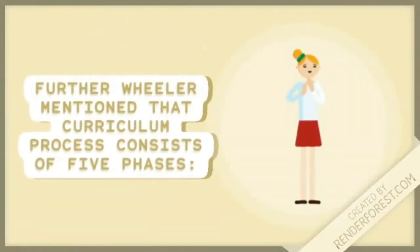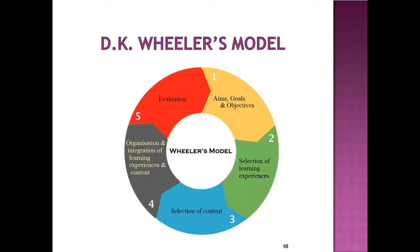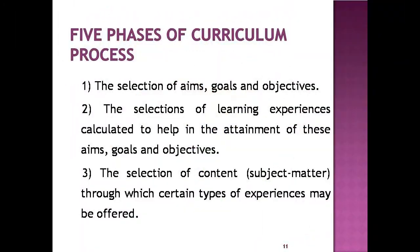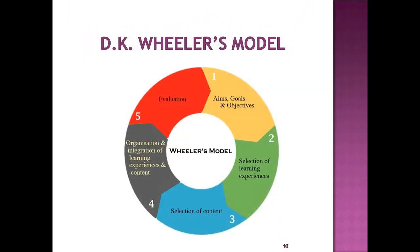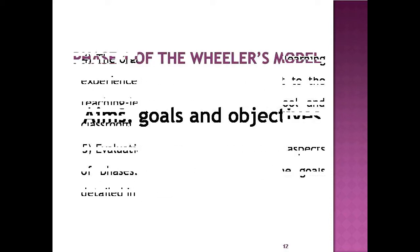Wheeler mentioned that the curriculum process consists of five phases. Phase one: the selection of aims, goals, and objectives. Phase two: the selection of learning experiences calculated to help in the attainment of these aims, goals, and objectives. Phase three: the selection of content, that is subject matter, through which certain types of experiences may be offered. Phase four: the organization and integration of learning experiences and content with respect to the teaching-learning process within school and classroom. Phase five: evaluation of the effectiveness of all aspects of phases two through four in attaining the goals detailed in phase one.